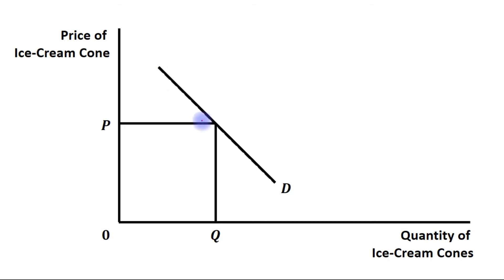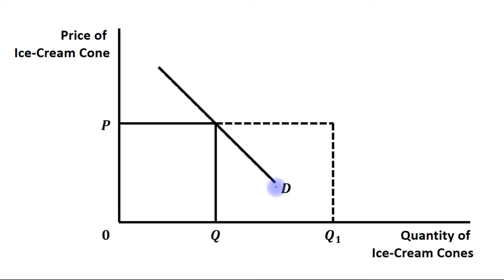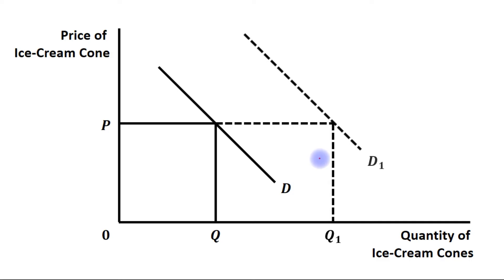Here we have this initial demand curve. Now if the price of ice cream cone remains the same at OP, however the quantity of ice cream cones increases — from OQ to OQ1 — while the price remains the same at OP, this will lead to a shift in demand curve. As you can see, there has been a rightward shift in demand curve, so this will be referred to as increase in demand.